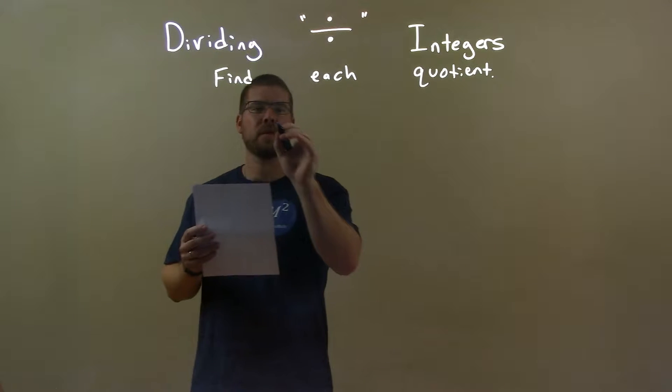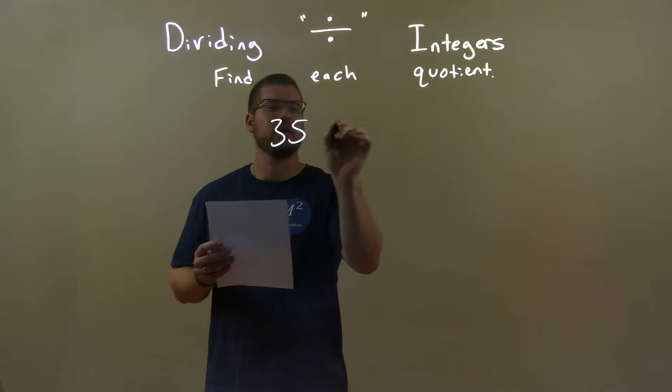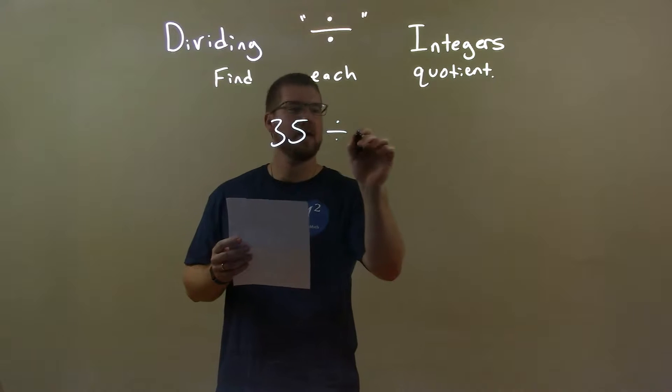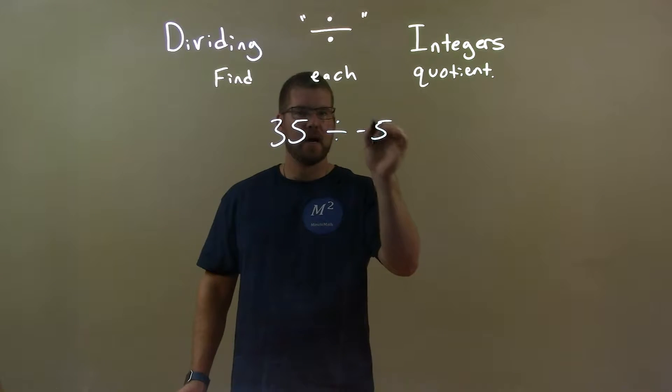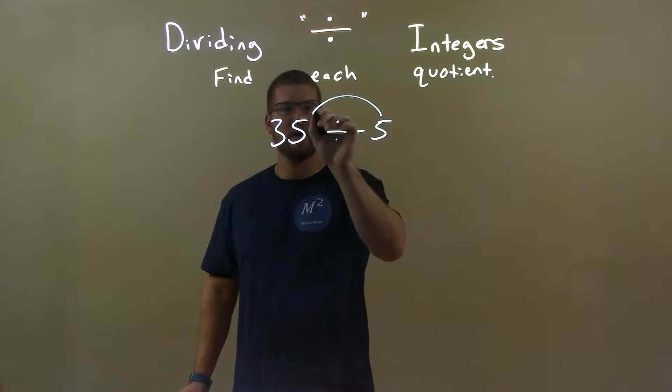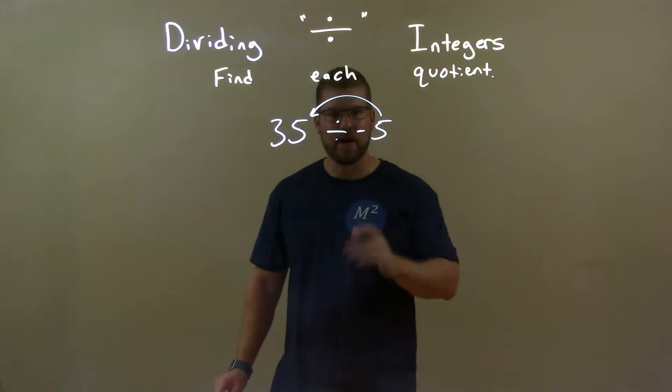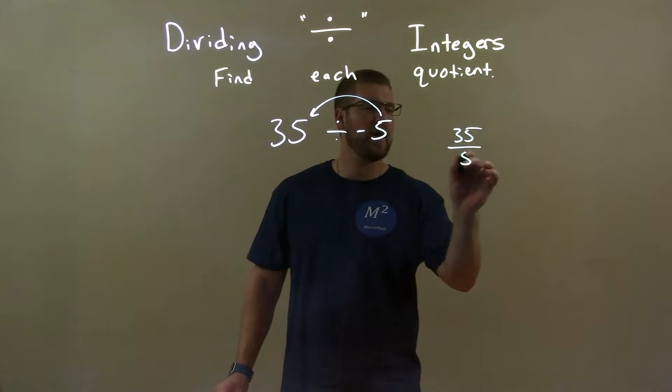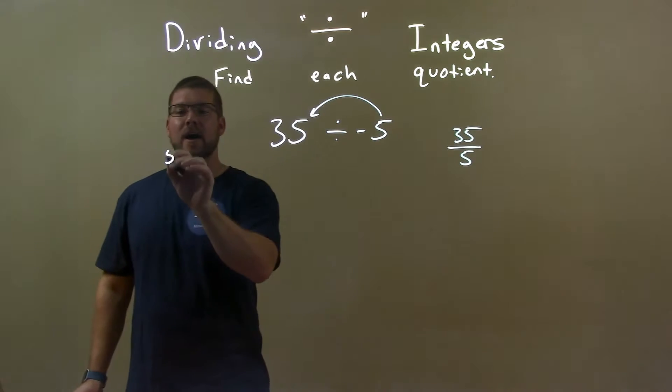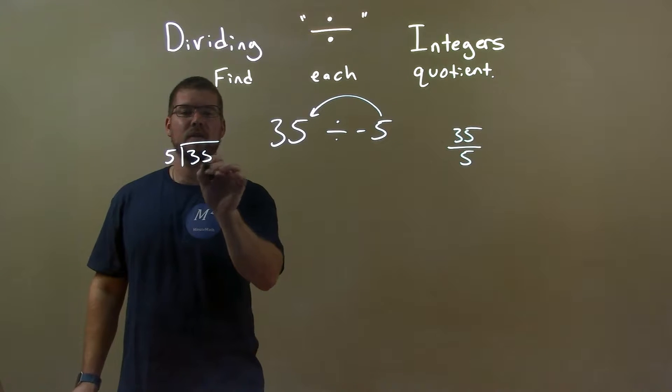If I was given this problem, 35 divided by negative 5, okay? So what they're asking here is how many times can we put negative 5 into 35? Well, how many times does just 5 go into it? You might see it like this, 35 over 5, or 5 into 35.